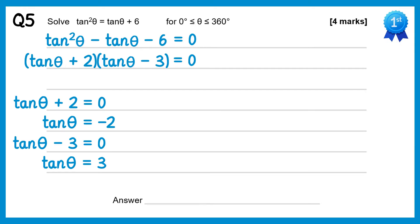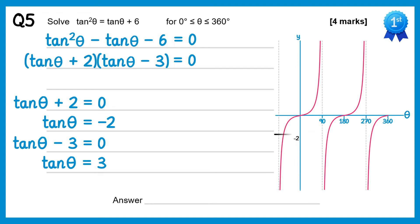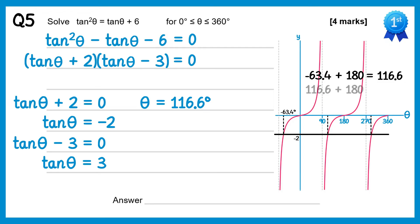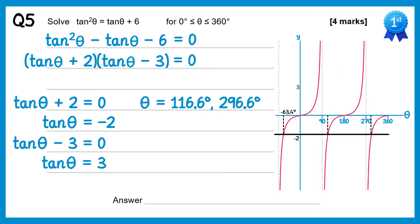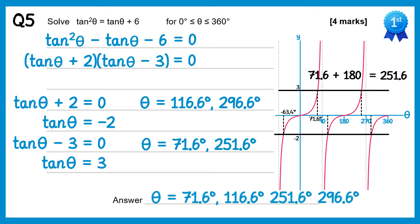Looking at the graph of tanθ, starting by drawing a line at negative 2: there are two solutions required. Inverse tan of negative 2 gives negative 63.4 degrees, so adding 180 gives 116.6, and adding 180 again gives 296.6. For tanθ equals 3, a horizontal line at 3 gives two solutions: inverse tan of 3 is 71.6 degrees, and adding 180 gives 251.6 degrees. Altogether there are four solutions: 71.6, 116.6, 251.6 and 296.6.